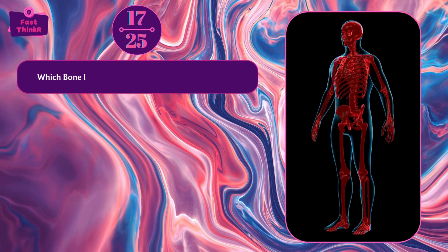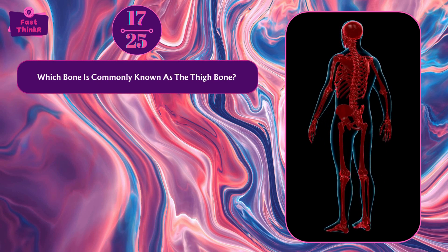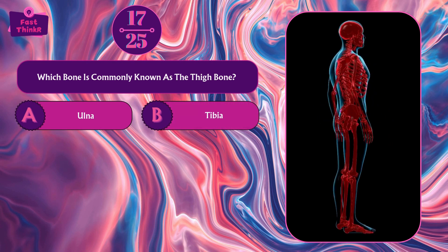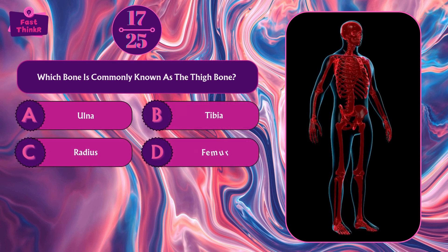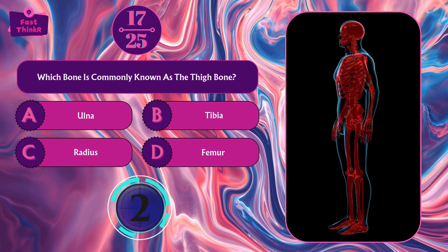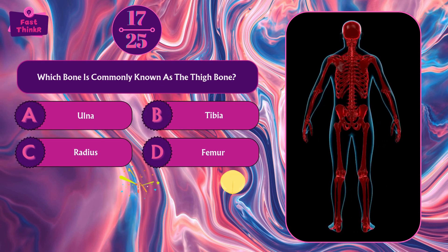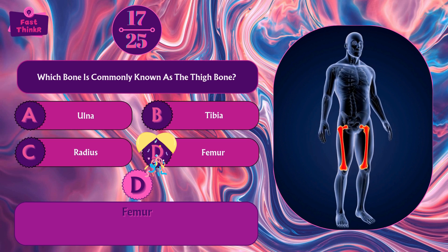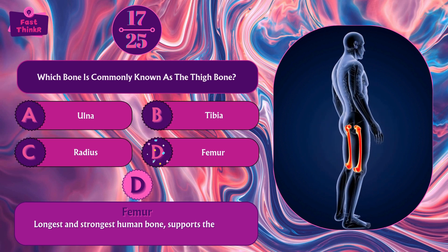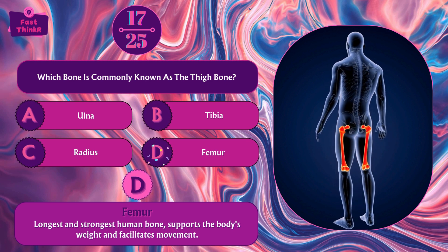Which bone is commonly known as the thigh bone? Ulna, tibia, radius, or femur? Option D — femur. The femur is the longest and strongest human bone, supporting the body's weight and facilitating movement.